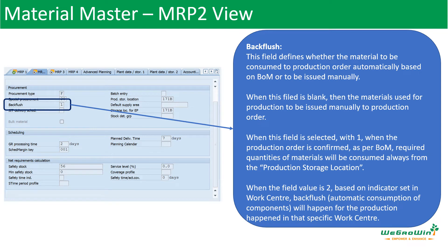Backflush can be manual or automatic. If it is blank, it is automatically automatic. The value is one — at the material master level. Backflush is defined at the material master. Suppose it is two — at the work center. That is the definition. This is the indicator.